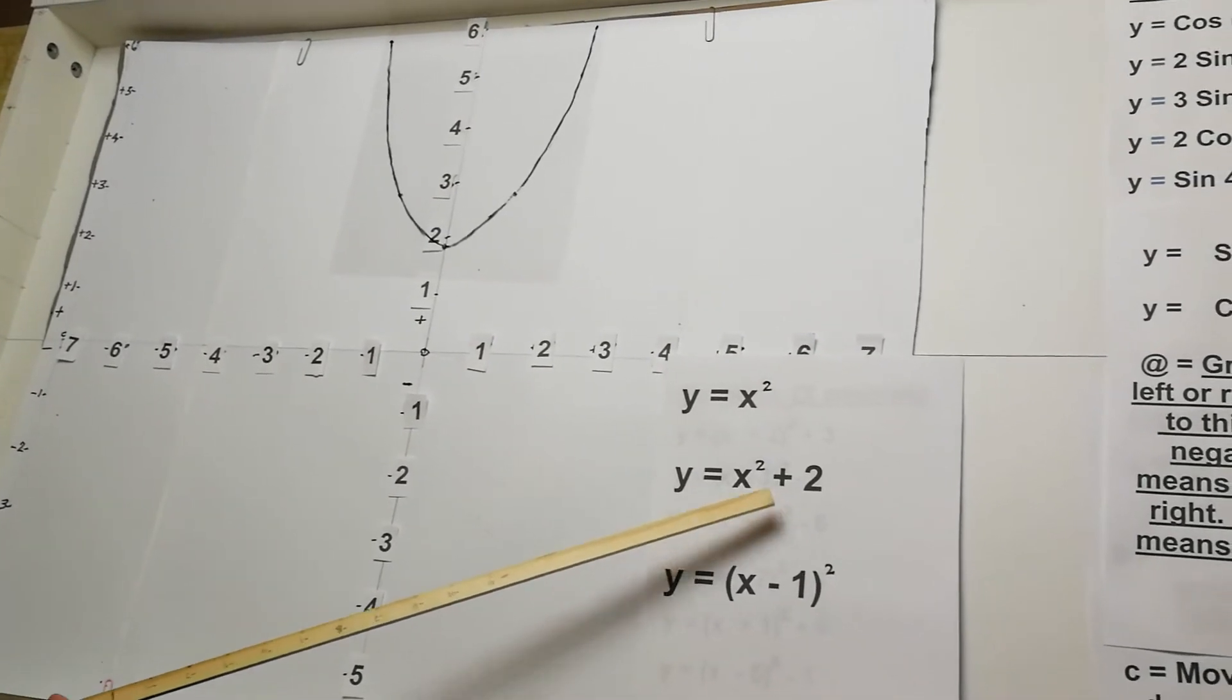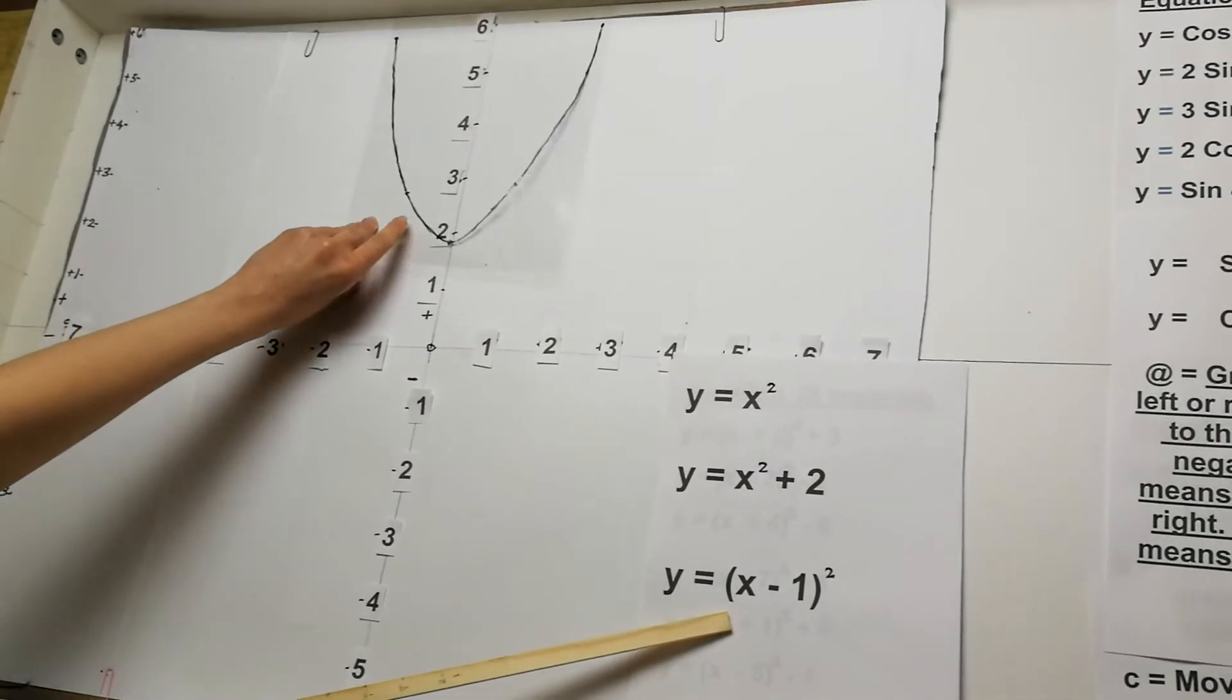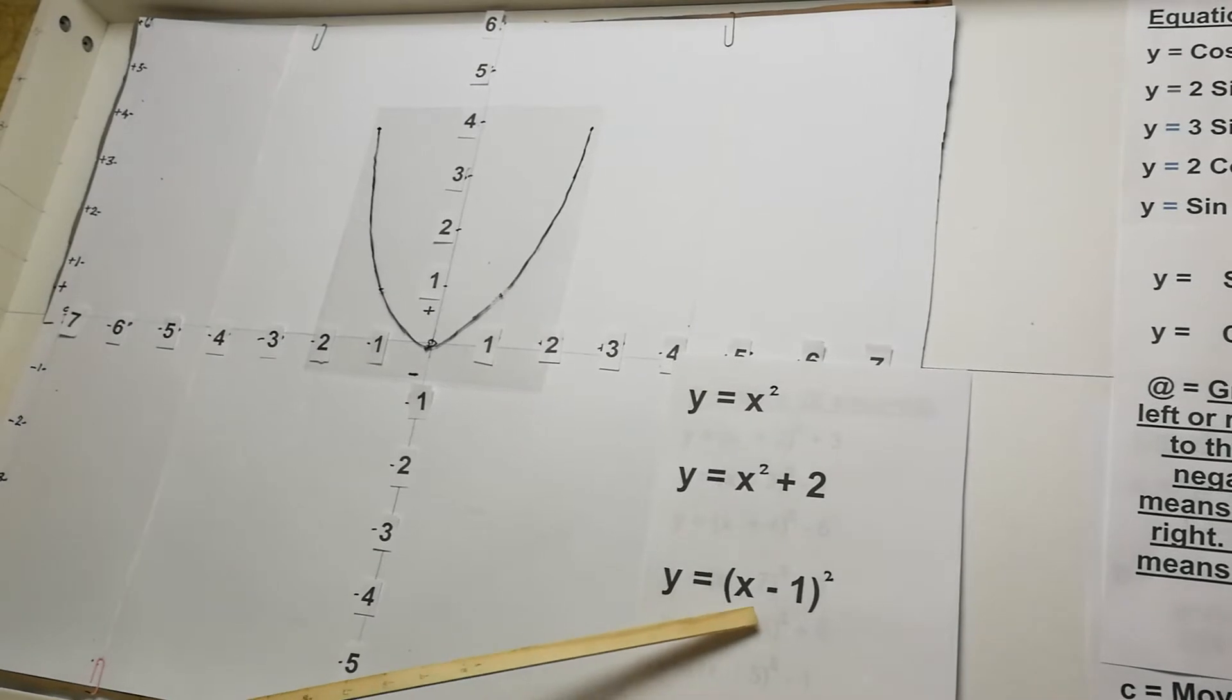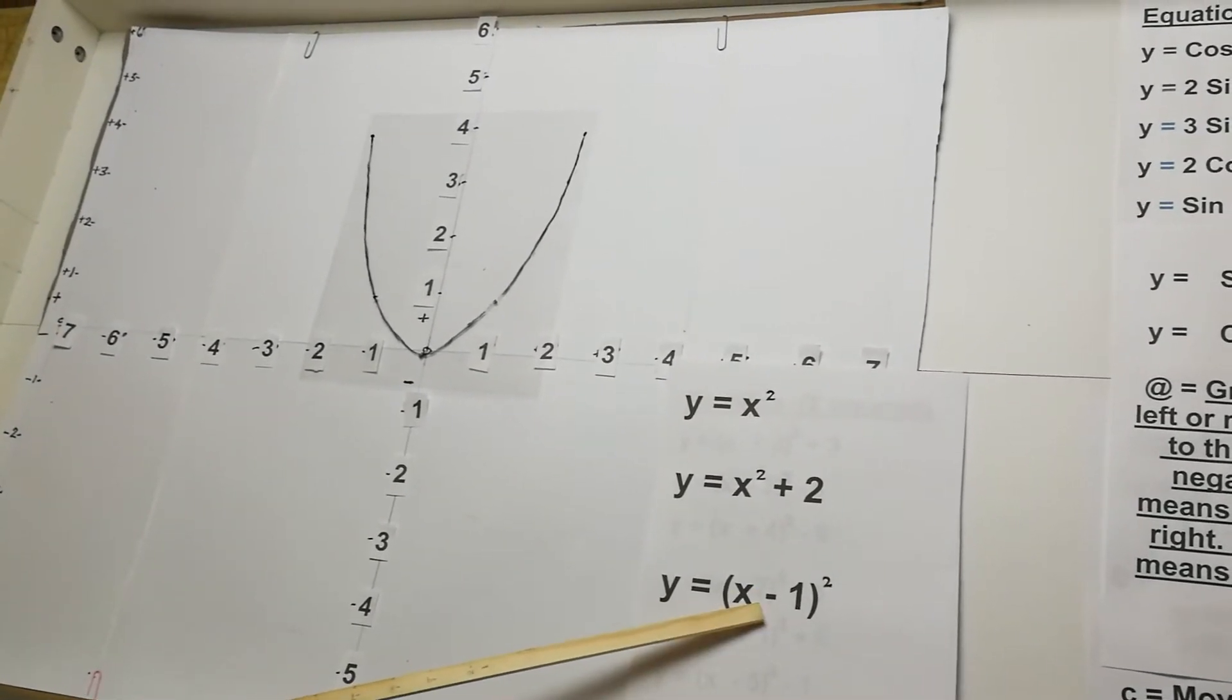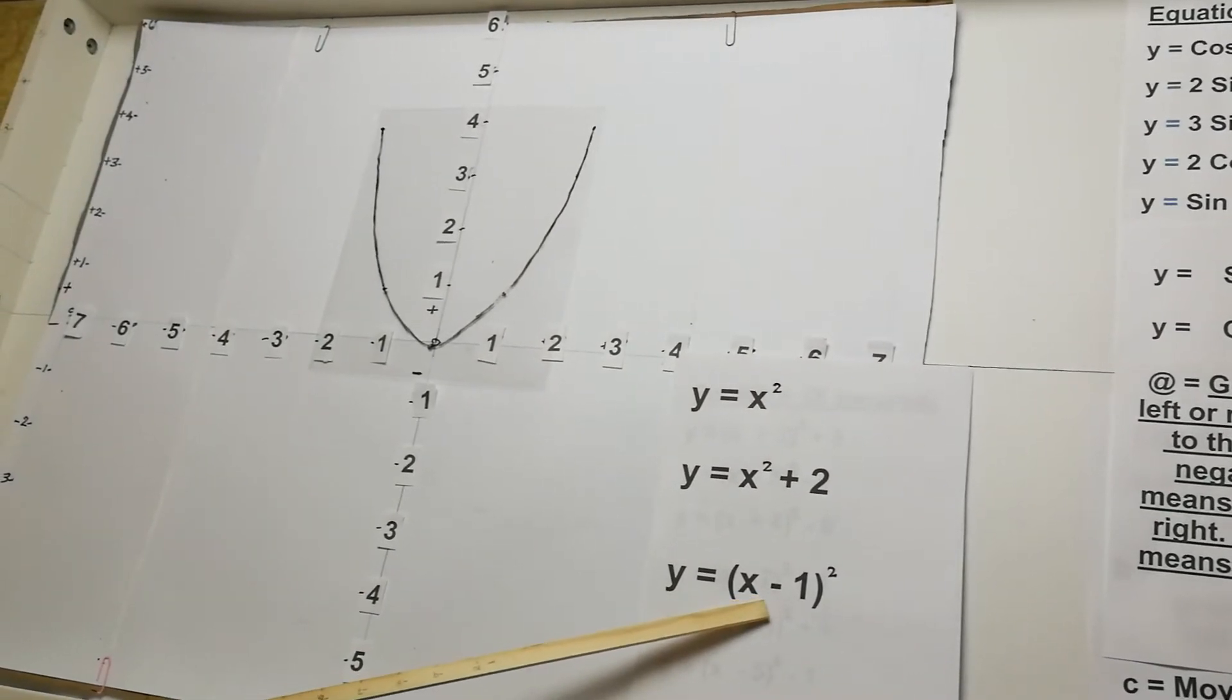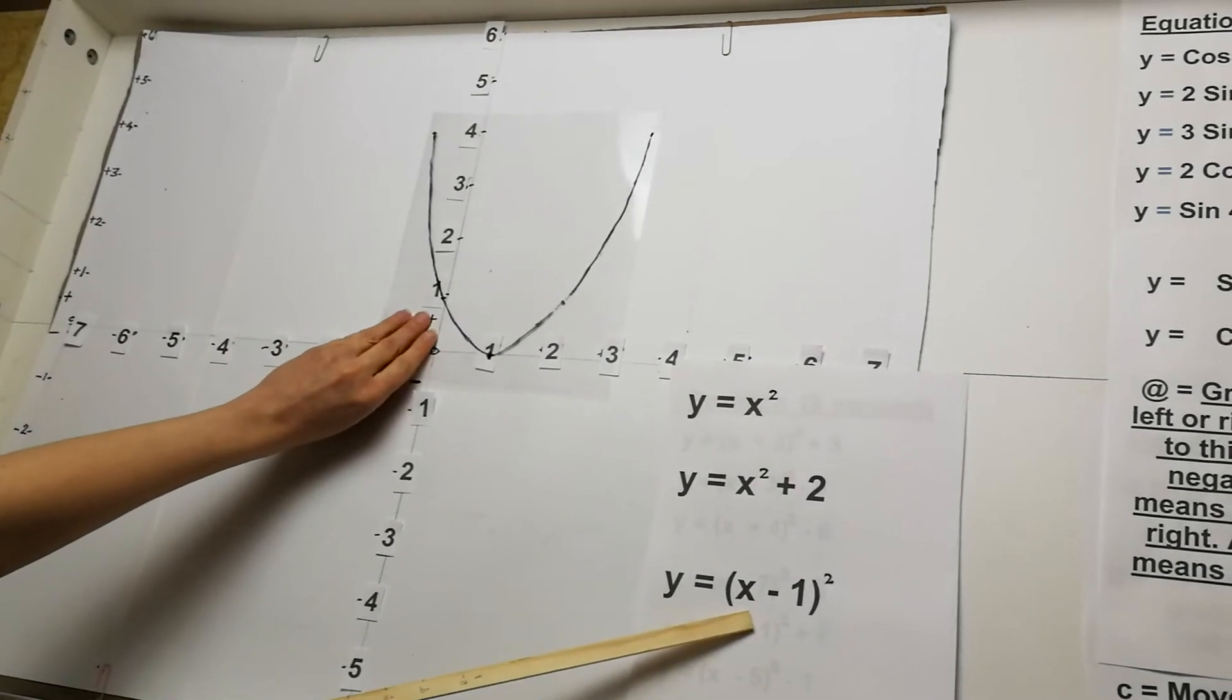So outside the graph means moving up or down. But inside means moving left or right. So if I go back to the original y equals x squared graph, when I have x take away 1 all squared, take away means moving left or right. And take away actually means moving to the right. So we move to the right by 1.